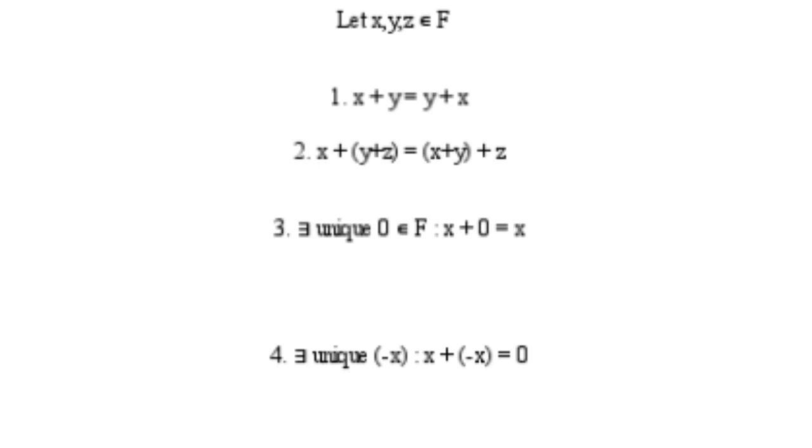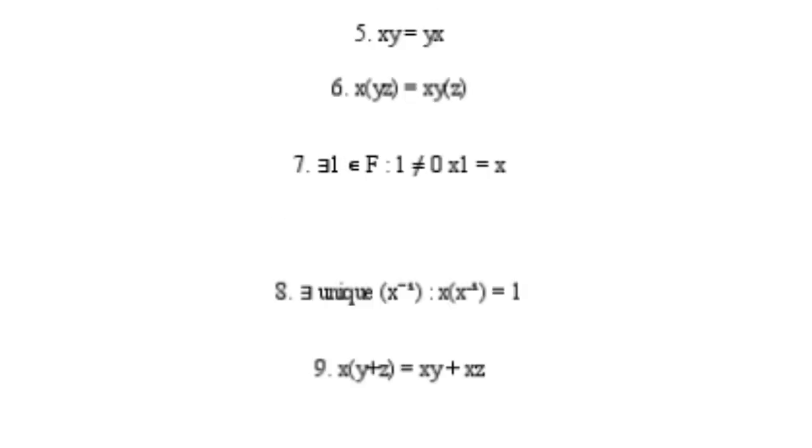Number one is the commutative property. The second one is the associative. Also, there has to exist a unique element 0 in f such that x plus 0 is equal to x. There has to exist a unique element negative x such that x plus negative x equals 0. Of course, negative x has to be in f as well.